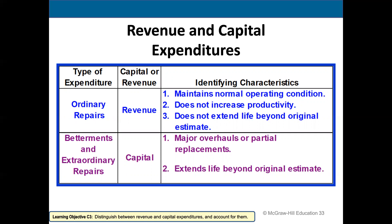Capital expenditures — sometimes called betterments or extraordinary repairs — extend the life beyond the original estimate or increase productivity. For example, if I added a wing onto a building so we could get more customers in there, that doesn't necessarily extend the life of it, but it increases the productivity or use of the asset.